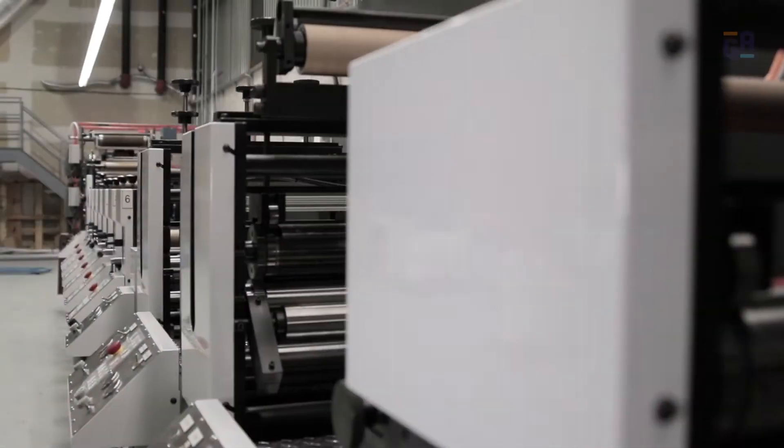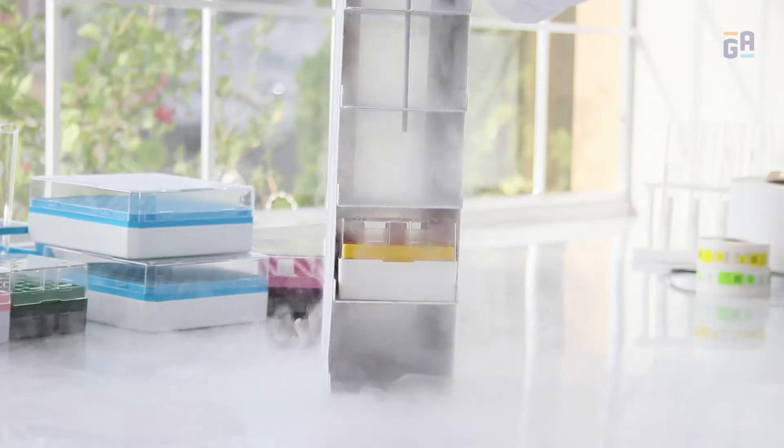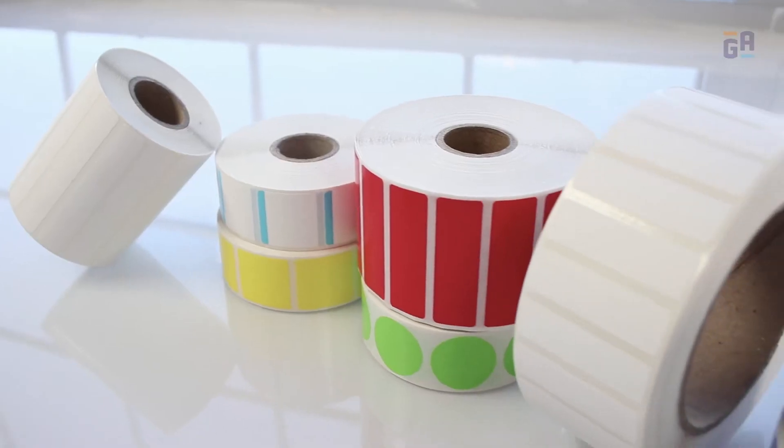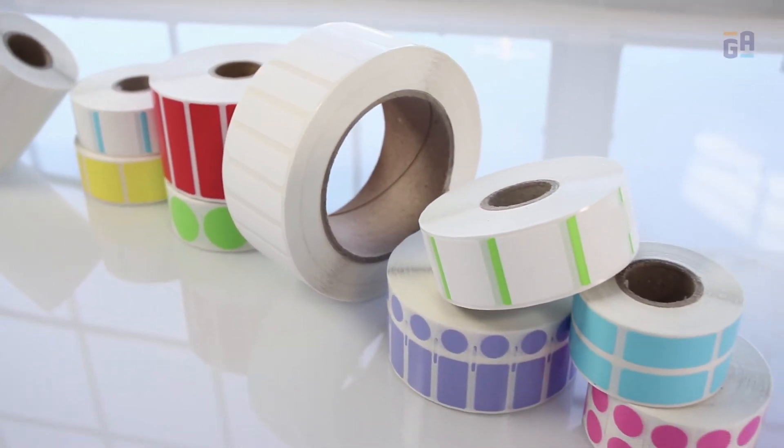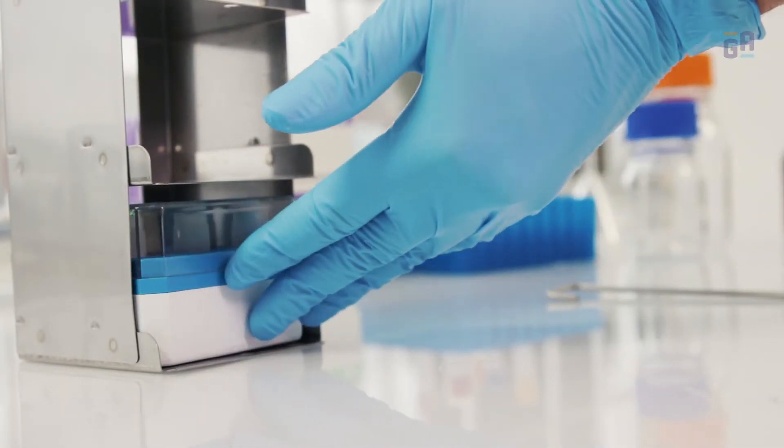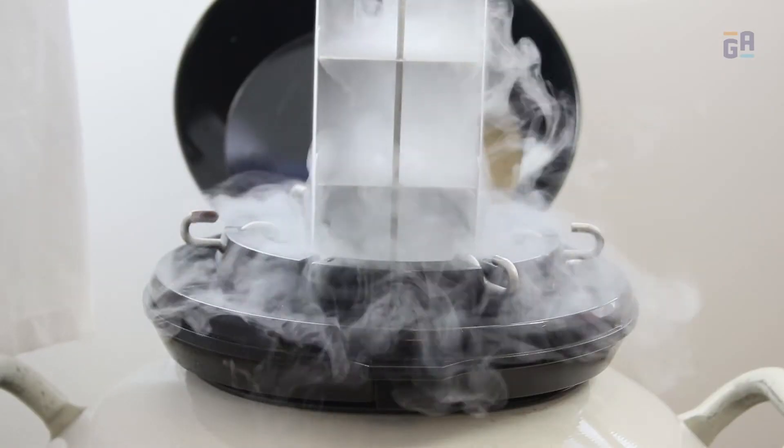At GA International, our specialty is creating labels that work under any extreme condition, which is why we have created an entire family of cryogenic labels designed for storing samples in ultra-low temperature freezers, dry ice, as well as liquid nitrogen and helium.